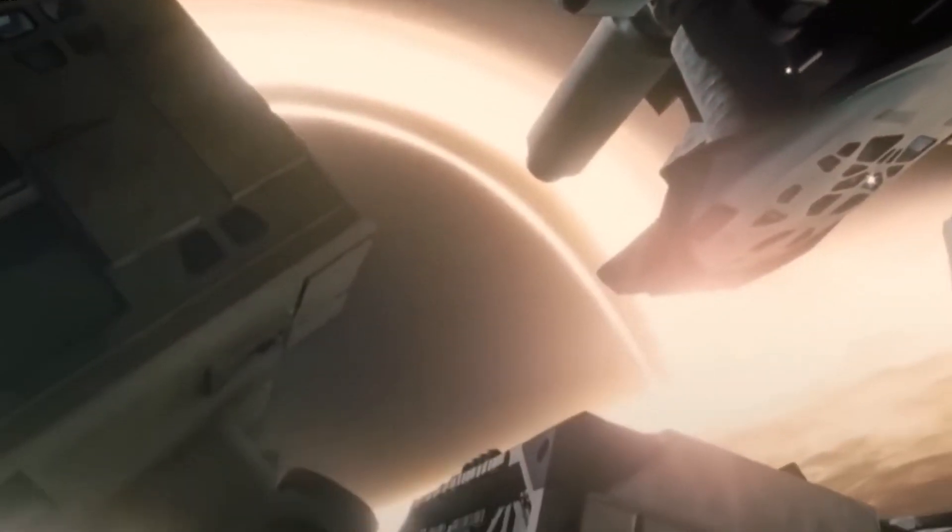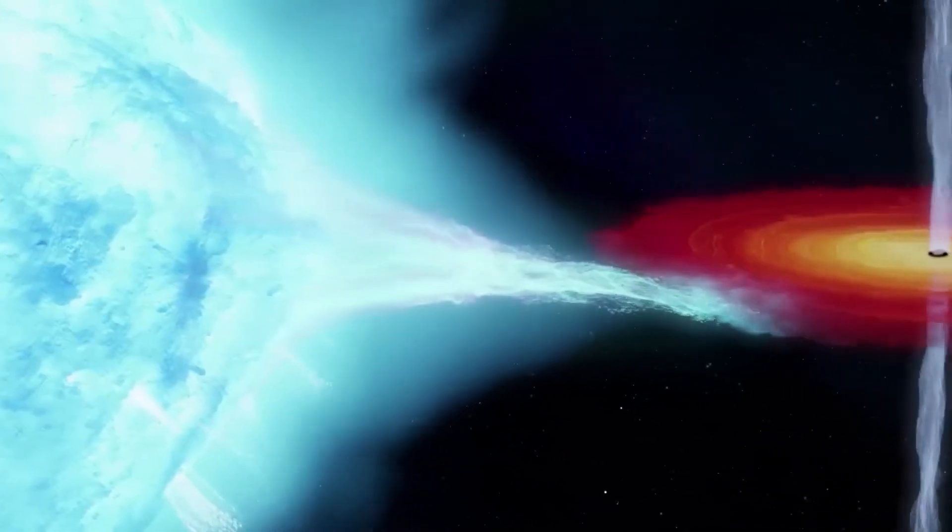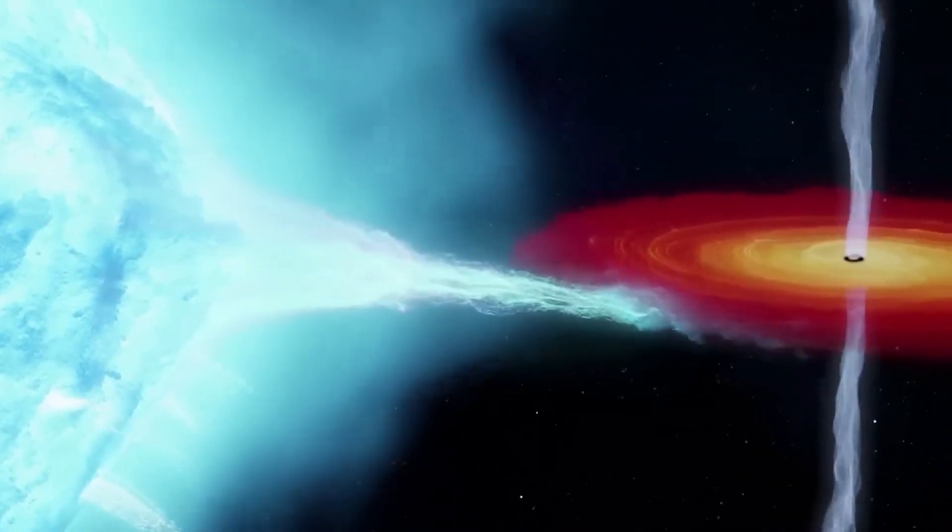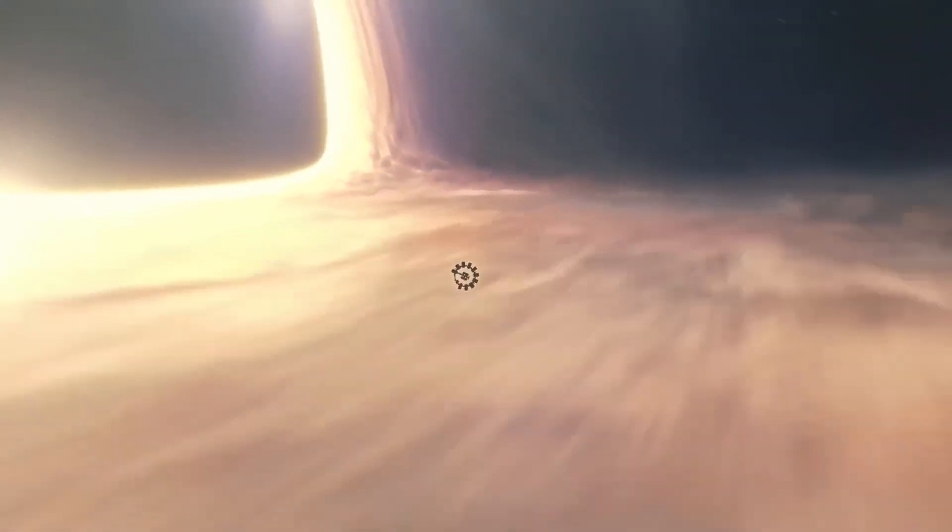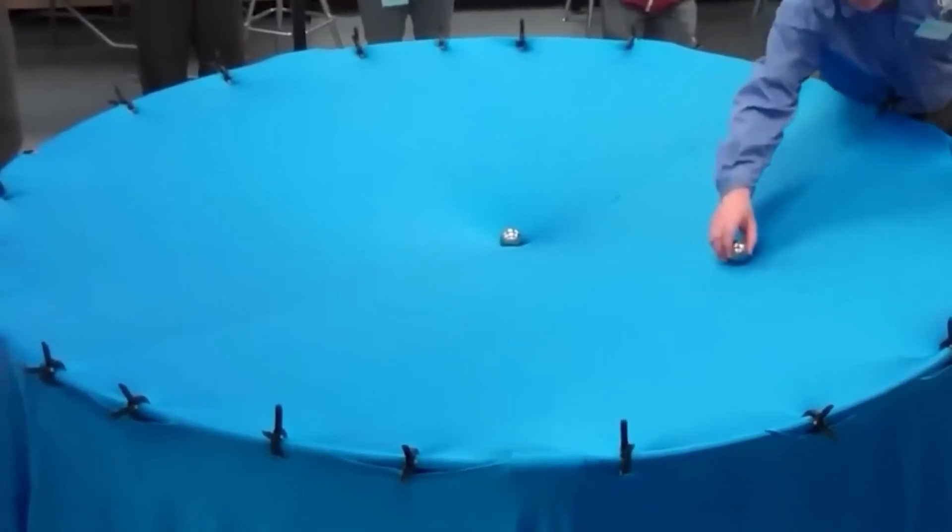Another way black holes can be detected is through gravitational lensing, which occurs when the gravity of the black hole bends light from a distant object, creating a distorted image of the object that can be observed.